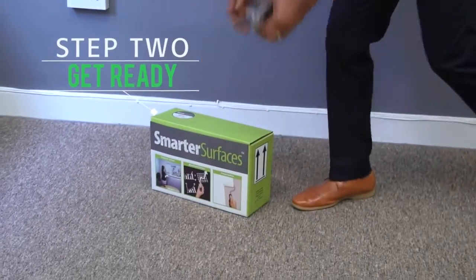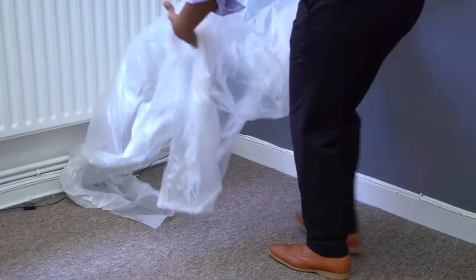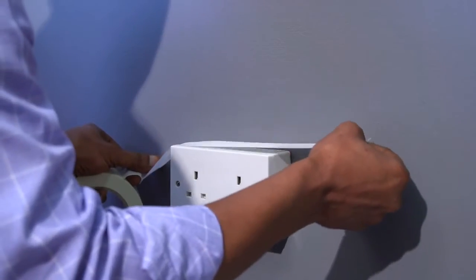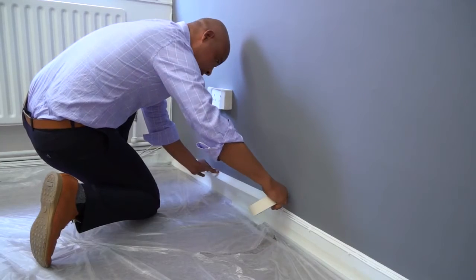Step 2. Get ready. Let's start to prepare the area. Lay down a cover sheet to protect your floor. Cover any edge, light switches or fittings with masking tape.